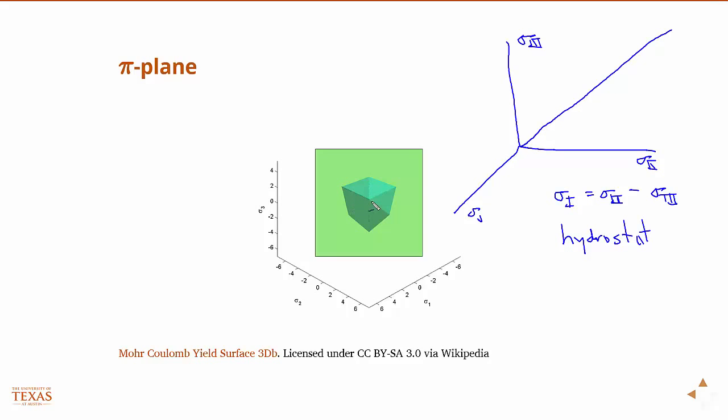So this is what you'd see if you're standing on that line looking into the yield surface. You'd see this hexahedron.